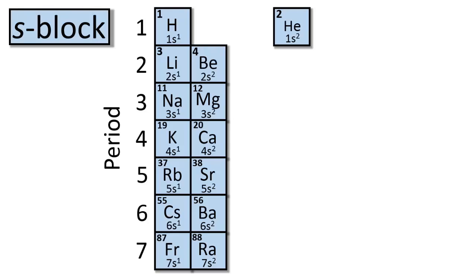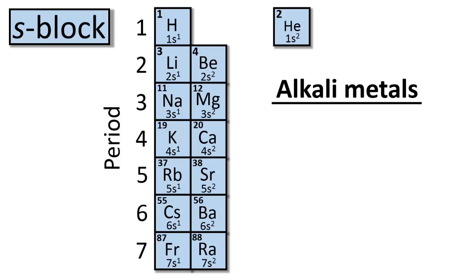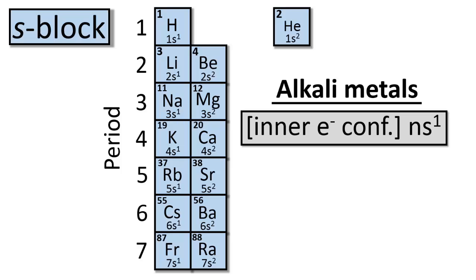Let's take a look at each block individually, starting with the s-block. These are the s-block elements, which include the alkali metals, the alkaline earth metals, and helium. The outer electron configurations of these elements are shown. In the case of alkali metals, the electron configuration of each element is simply the inner electron configuration plus ns¹, where n is the period of the periodic table in which the element is found.